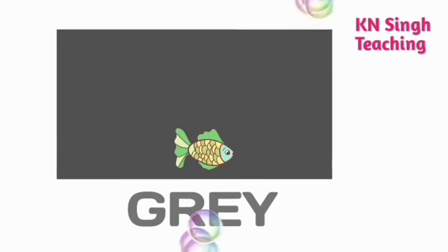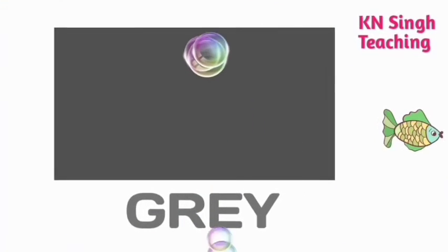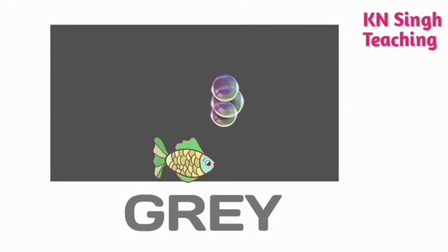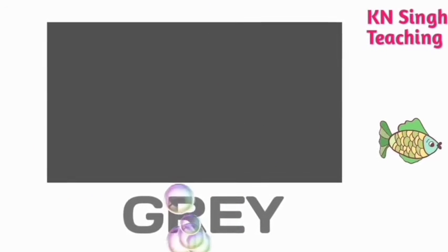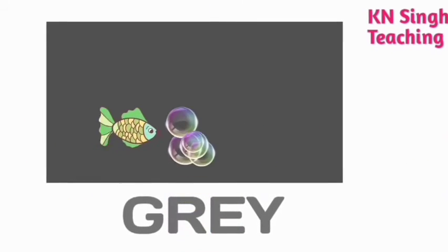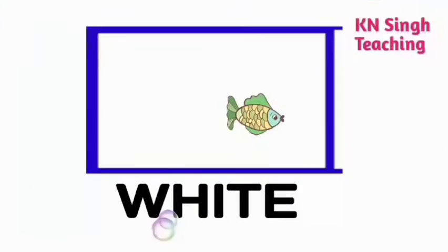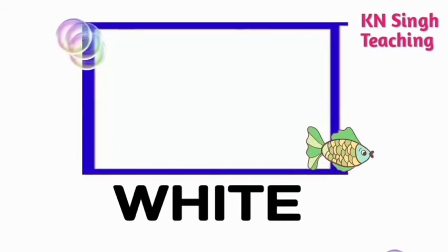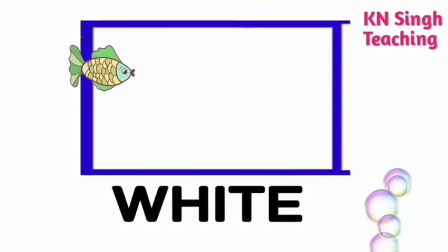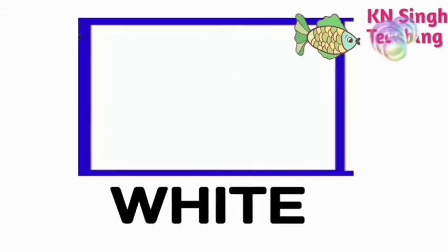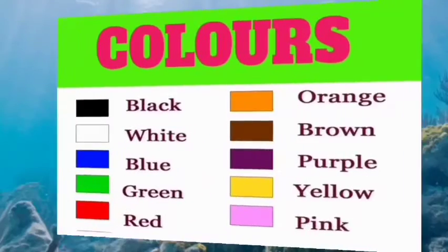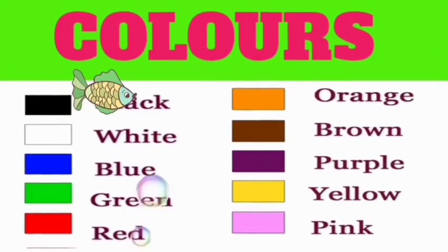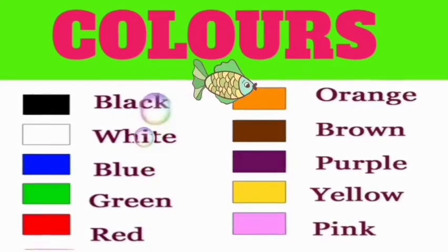See the next color: black. This color is black. Next color is gray — G, R, E, Y — gray. See the next color: white — W, H, I, T, E — white.